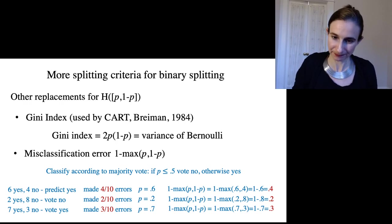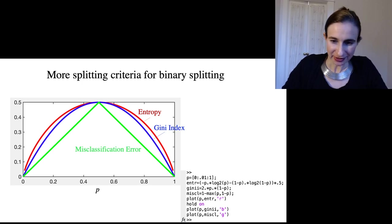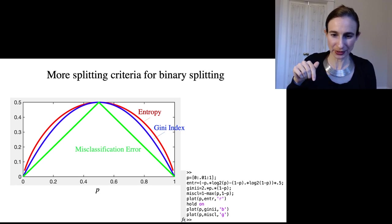So now you understand why this is the probability of error. It's the probability of error according to a majority vote rule. I want to show you how these things compare with each other.